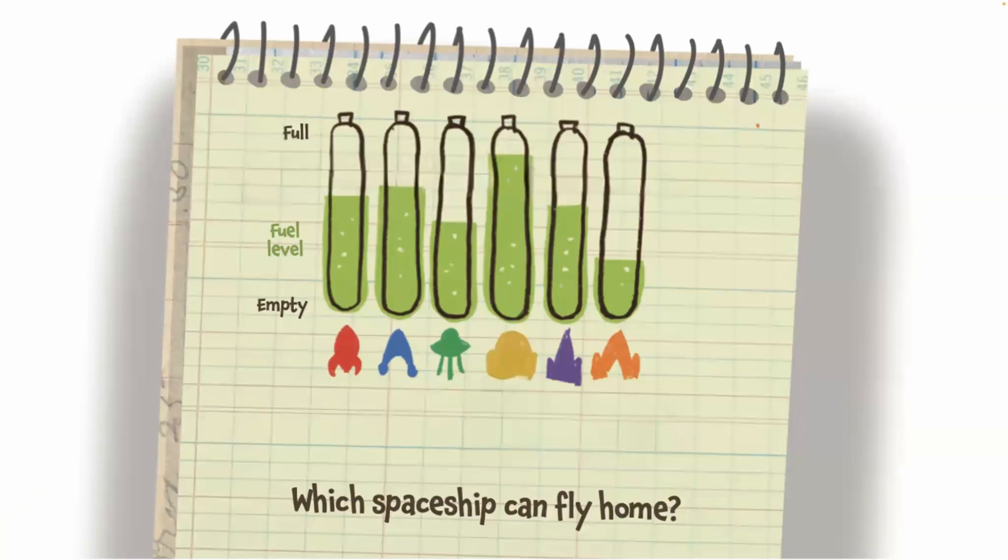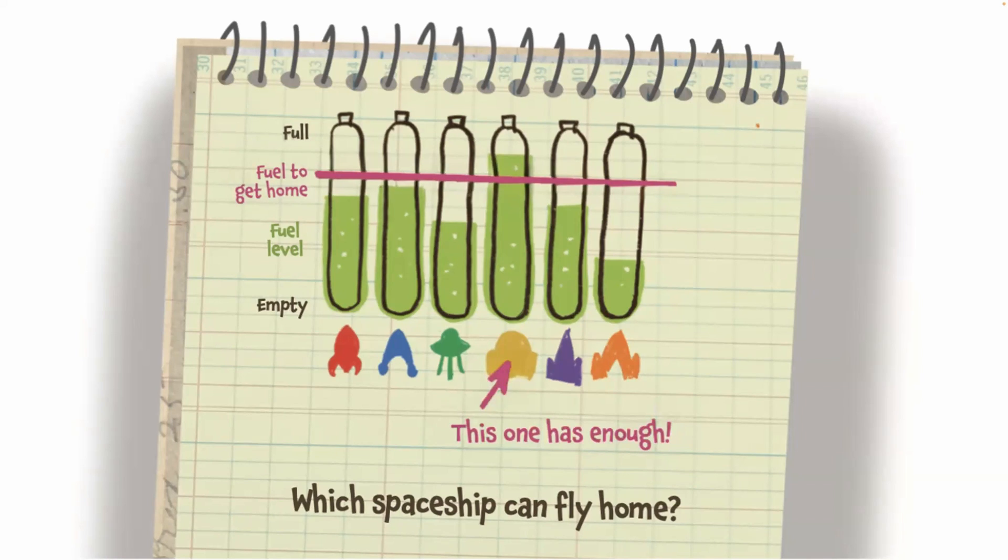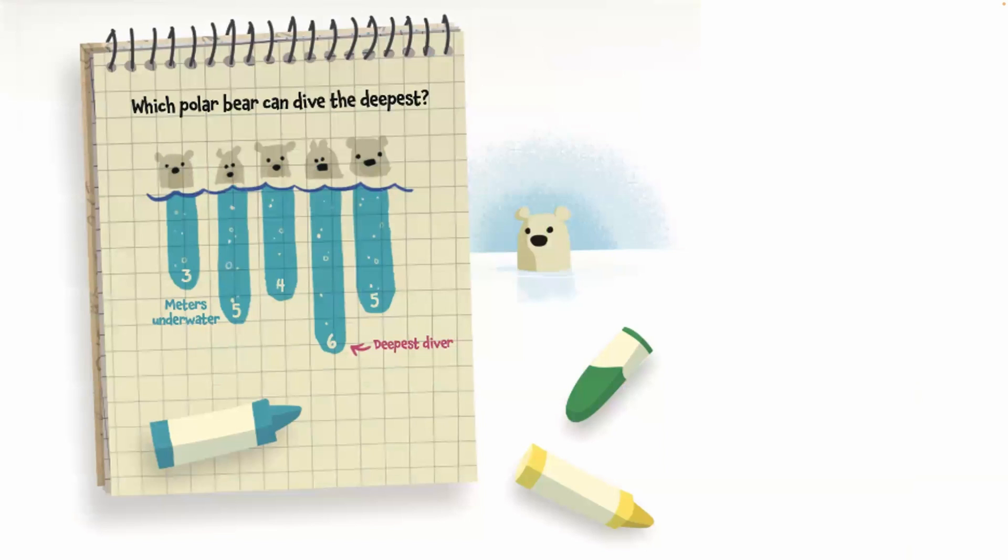I used a stacked bar chart to help the aliens understand which spaceship had enough fuel to fly home. Only the yellow one had a fuel level above the line that showed the amount of fuel needed to go home. In the Arctic, I plotted the polar bear's plunge using an upside-down bar chart. That's part of the fun of drawing data. Once you understand the basics, you can play.